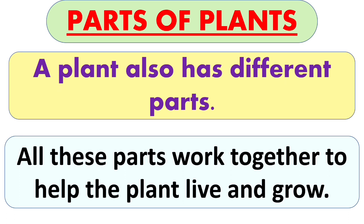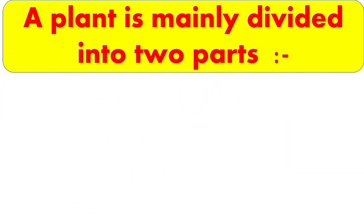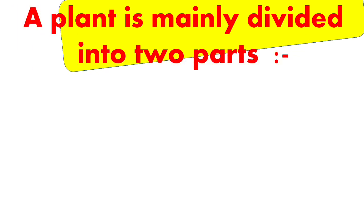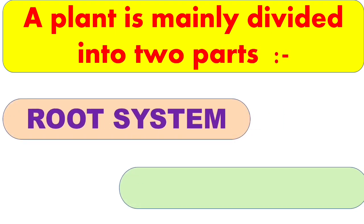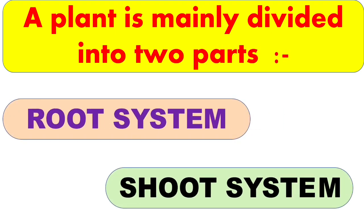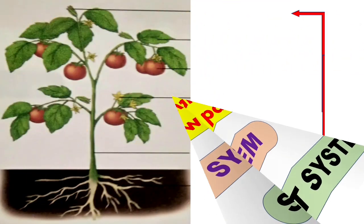Just like the human body, plants also have different parts, and all these parts work together to help the plant live and grow. Now let us see the various parts of a plant. A plant is mainly divided into two parts: the root system and the shoot system.